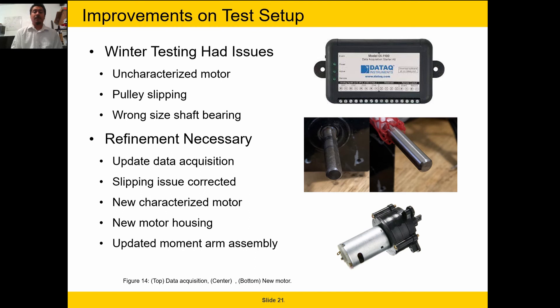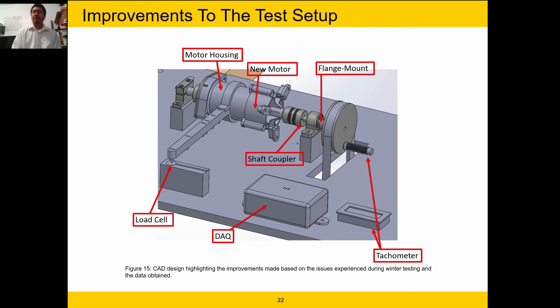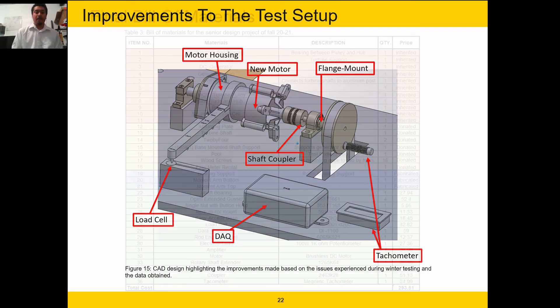One of the things we opted to do was update the data acquisition. We went with a data acquisition system to record several things in real time. Our slipping issue was also addressed. This was corrected by having a flange mount so we can firmly clamp on the shaft as well as bolt onto the pulley so there was no slipping from that area. We went with a new motor that was characterized and was new so we know the condition of the motor. Along with that, we had to make a new motor housing for our setup as well as update the mount to accommodate the dimensions of our newer motor. As you can see in the CAD here, we have the new updated test setup and we have the DAQ as well as our sensors which are going to be obtaining our force, our RPMs, as well as the power generated from the motor.